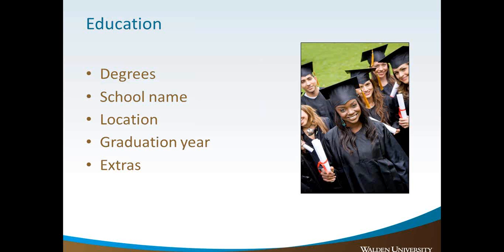Your next section will typically be your education. Start with your current degree and list the degree name, school name, location, and graduation year. If you have yet to graduate, state expected and the year the degree is expected to be completed. You may have additional information to add here, such as GPA, honors, awards, or relevant coursework. Here are three examples of how you can format your education section.